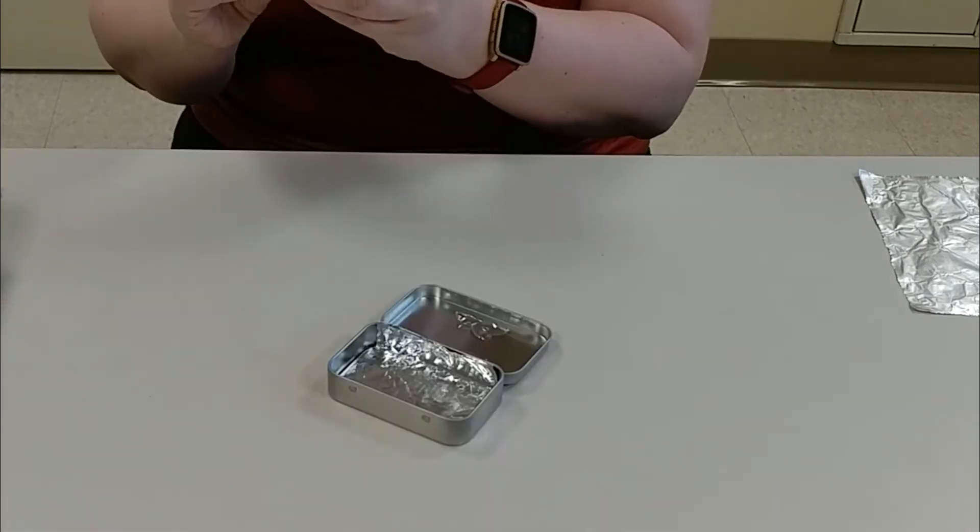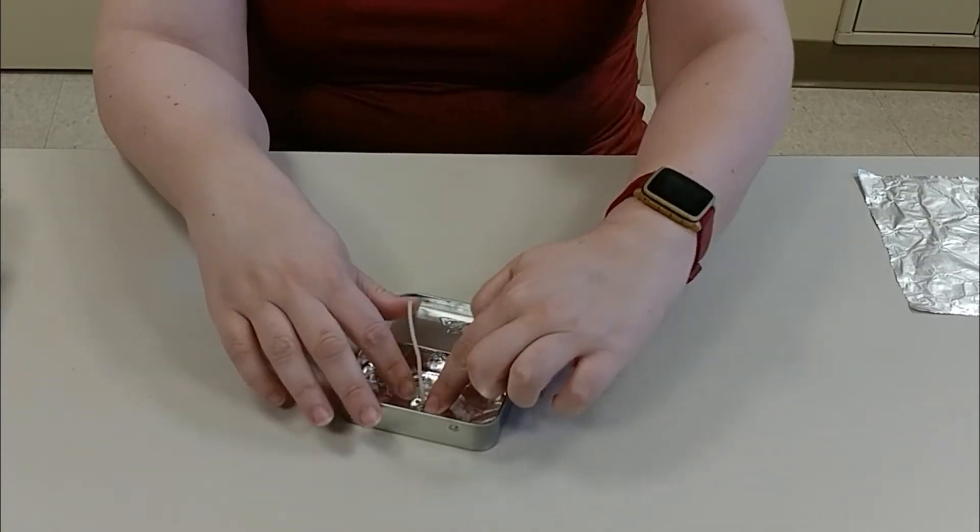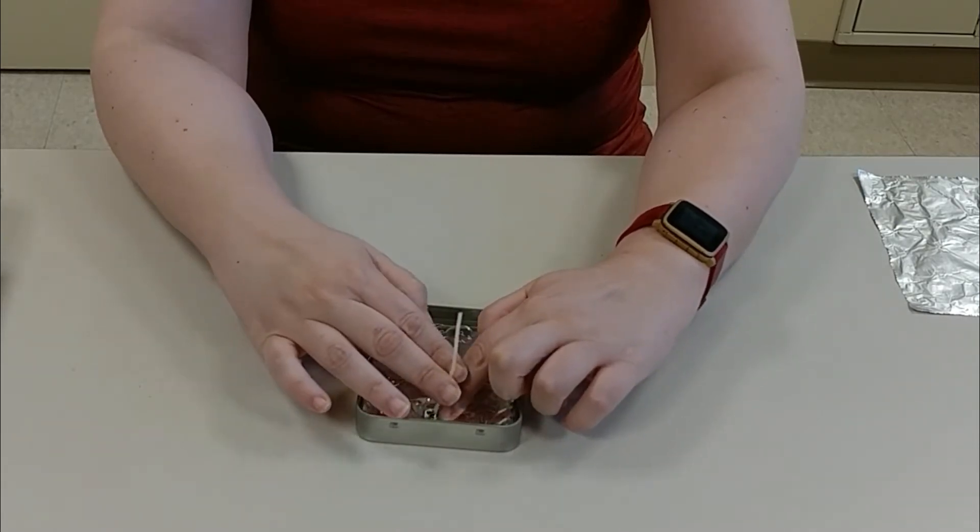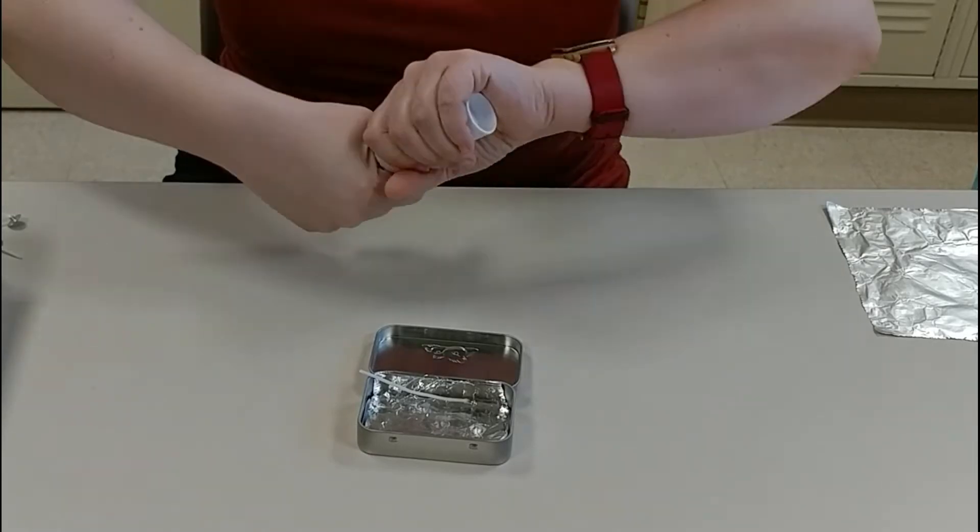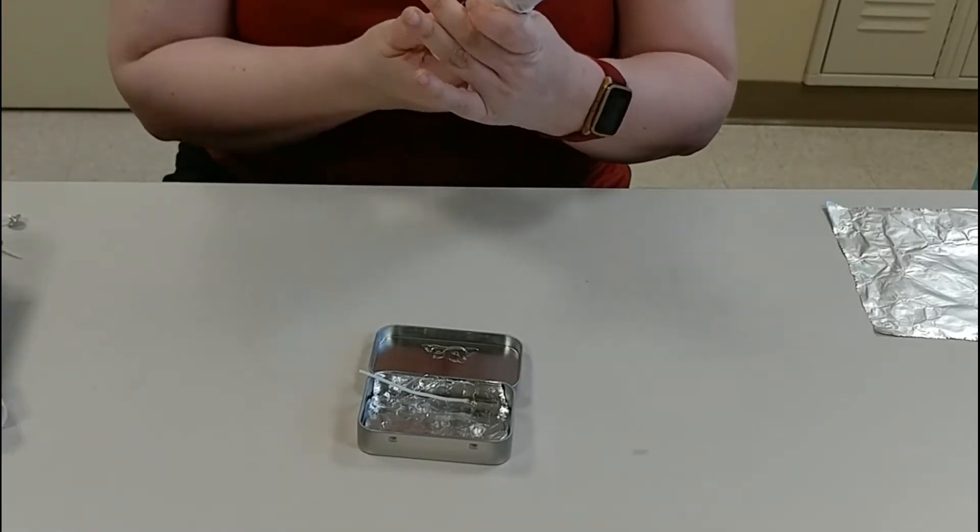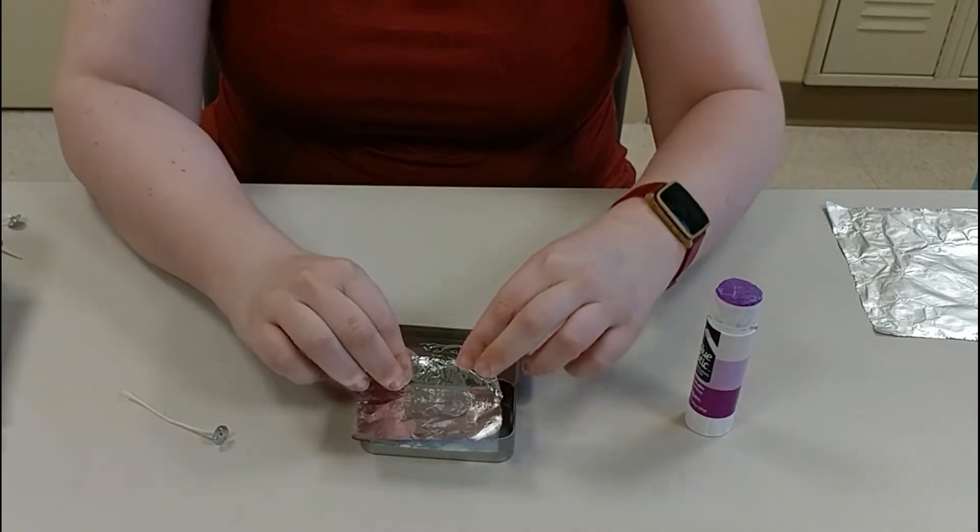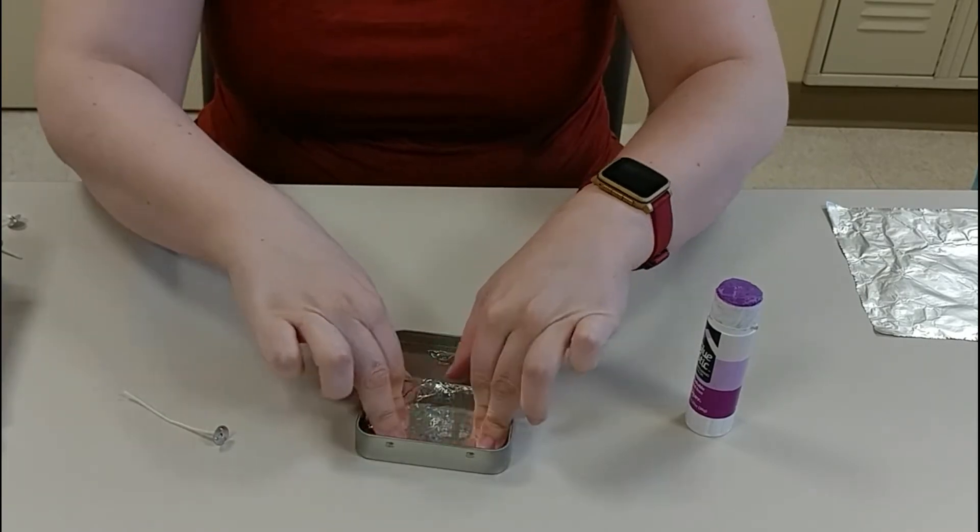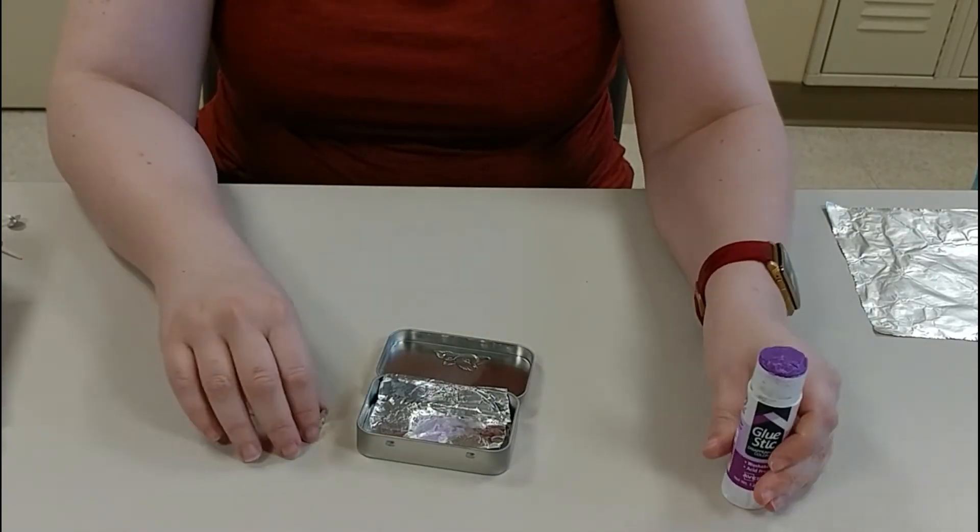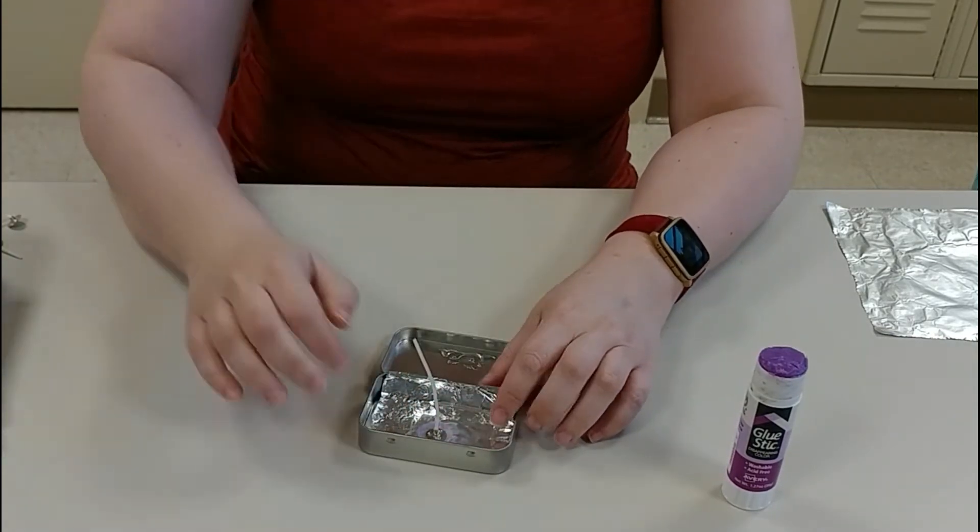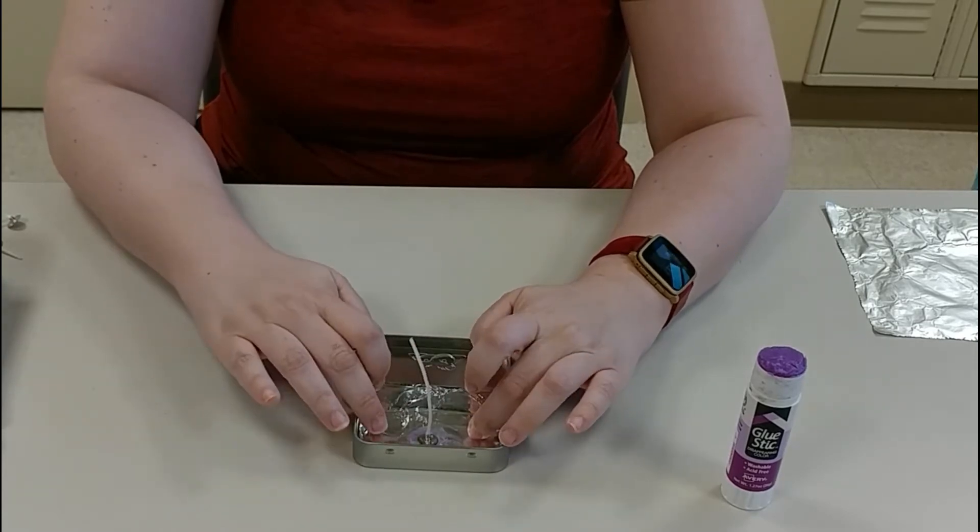Take your wick and put it right in the middle of the bottom. These are nice wicks that are already waxed, so they'll stand up on their own without any need to be held up. I'm putting some glue stick on the bottom of my tin, putting my tin foil back in there, then a little more glue on top of the tin foil, right in the middle, and press my wick onto there. The wax will hold everything in place.